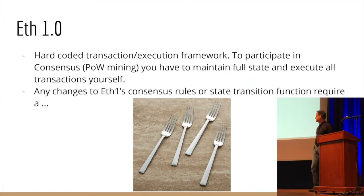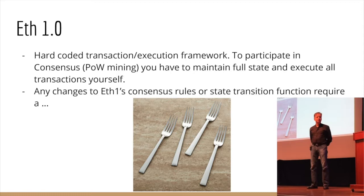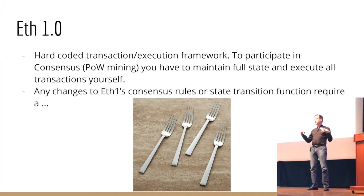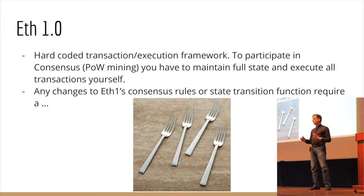To get the right mindset, let me first remind everybody: Ethereum 1, what it is — an execution layer. The critical point is that it's a hard-coded transaction and execution framework. What is state, the state structure, how it's held, all of the things related to transactions and contracts — all of that stuff is embedded in what it means to be a full node and a miner. And you have to actually have all of the state of Ethereum to be a full node and a miner to participate in consensus. That is what causes any changes in Ethereum 1's consensus to cause a fork, and we've had many forks in Ethereum so far.